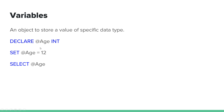In general, a variable has a type and a value. The type can be integer or string, and the value must match the declared type.